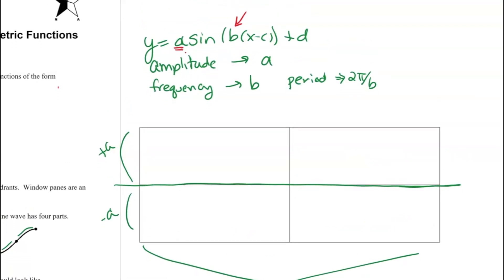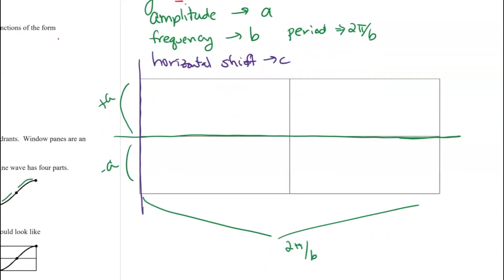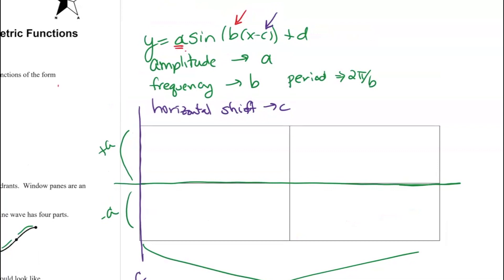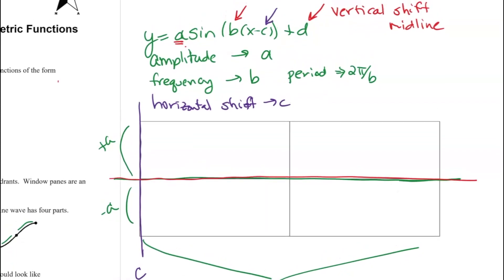We know that this c that sits right here is my horizontal shift, so that means that the start of my windowpane is going to be at x equals c. And then finally, the d that's added out here is our vertical shift, and I often refer to that as the midline on a trig function, so that's y equals d.